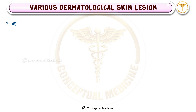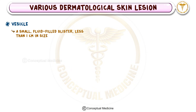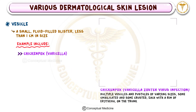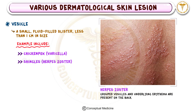Next, let's talk about the vesicle, a small, fluid-filled blister less than one centimeter in size. Vesicles are classic features of chickenpox or varicella, and can also appear in shingles, or herpes zoster, which follows a dermatomal distribution.